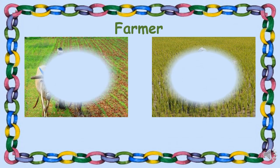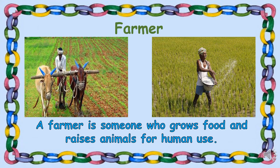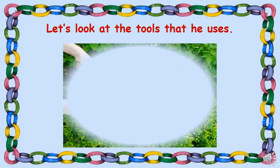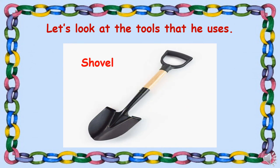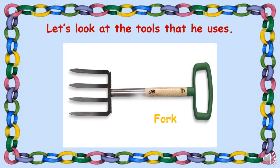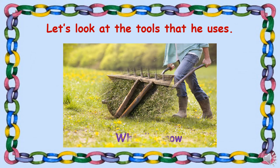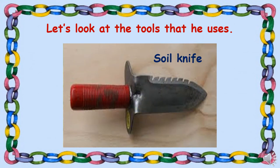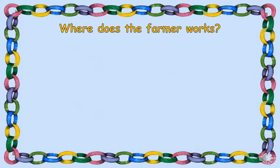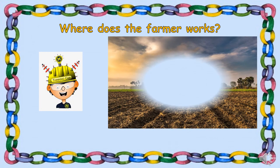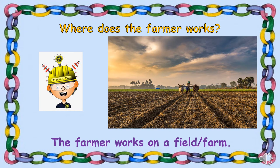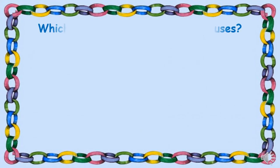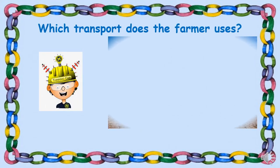Farmer: A farmer is someone who grows food and raises animals for human use. The tools a farmer uses include pruning shears, shovel, hoe, fork, rake, wheelbarrow, and soil knife. The farmer works on a field or farm, and uses a tractor as transport.